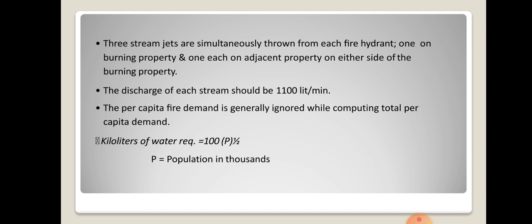The per capita fire demand is generally ignored while computing the total per capita demand. In kilolitres of water, the fire demand is usually calculated using the formula: 100 × √P, where P is the population in thousands. So the square root of the population in thousands multiplied by 100 gives the total kilolitres of water required for fire demand.